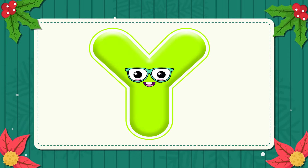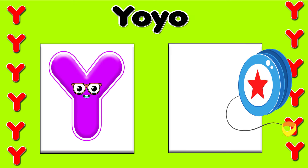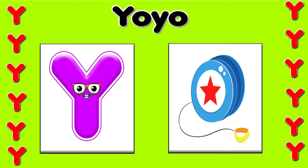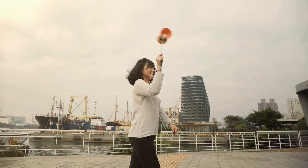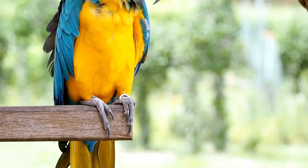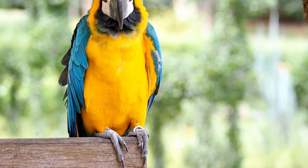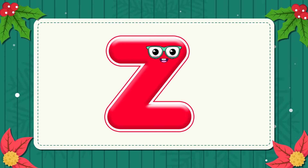Y. This is the letter Y. Y is for yo-yo — y, y, yo-yo. Y is for yellow — y, y, y.